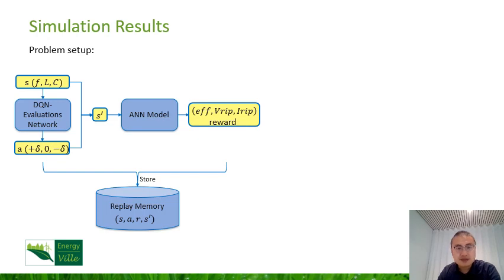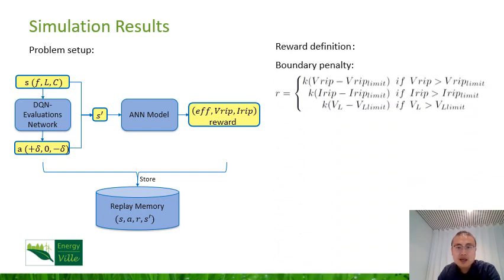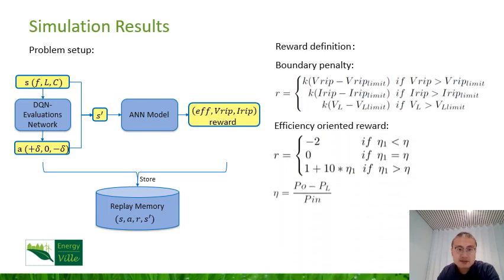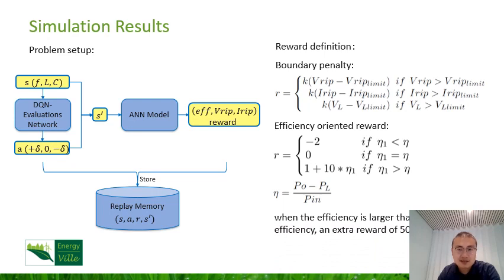The definition of reward is critical for DQN. For the scenarios when the ripple and volume constraints are exceeded, the reward is defined with K, a large negative number working as a penalty factor for exceeding the constraints. This penalty trains the agent to avoid exceeding those constraints. For scenarios when the constraints are not exceeded, the reward function is defined by the efficiency. In addition, when the efficiency is larger than one expected value, an extra reward of 50 will be added. In this way, the agent tends to find the scheme to increase the efficiency and also find the value that can exceed a certain expected value.